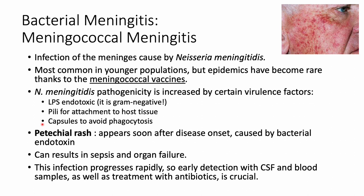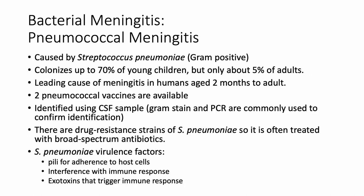People with this infection commonly develop a rash soon after disease onset, caused by the bacteria releasing endotoxins and the immune system reacting to them. This can result in sepsis and organ failure, and the infection can progress very rapidly. Detection involves collecting cerebrospinal fluid and blood samples for culture, and very early, aggressive antibiotic treatment is crucial.